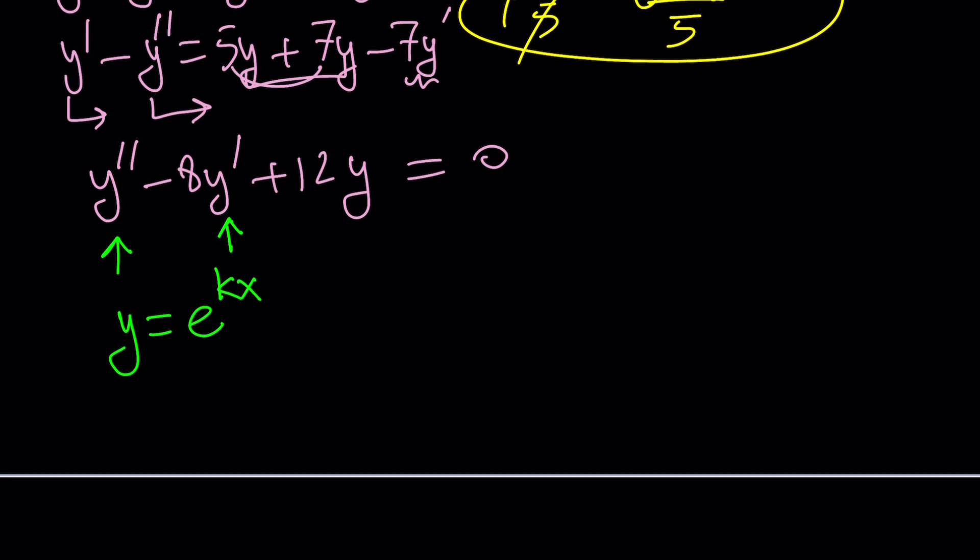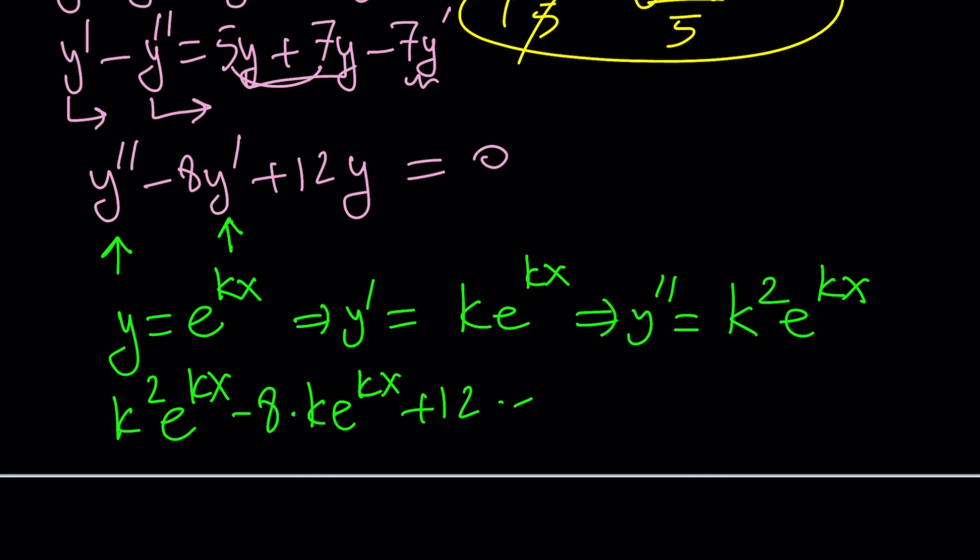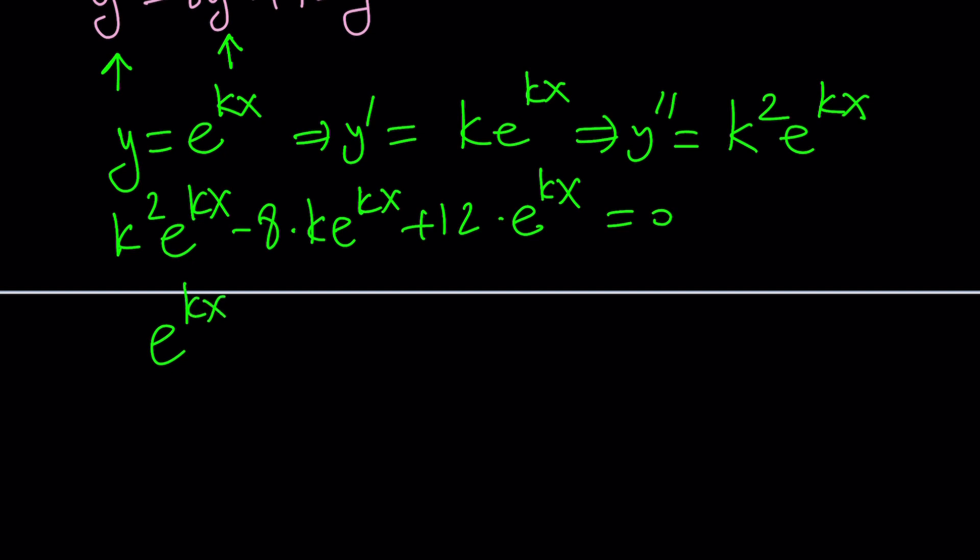How do you find it? Just differentiate y once. You would get k times e to the kx. Differentiate it one more time. y double prime is going to be k times k, which is k squared e to the kx. And by introducing this into our equation, you're going to get k squared e to the kx minus 8 times k e to the kx plus 12 times e to the power kx equals 0. And by taking out e to the power kx, you'll get k squared minus 8k plus 12 equals 0. And this part will actually be our characteristic equation, the roots of which will give us the solutions.